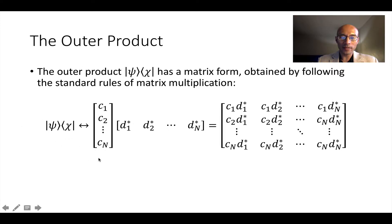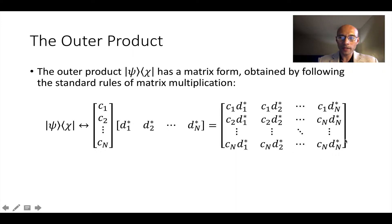That demands this matrix representation. What happens when we do this, we have an n by 1 times a 1 by n matrix, and we get an n by n matrix. So for the first row, we get c1 multiplied by all of this. Then c2 multiplies the whole row, and cn multiplies the whole row. Notice d1 is in the entire first column, d2 is in the entire second column, and so on.